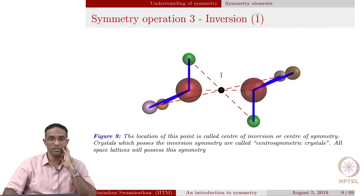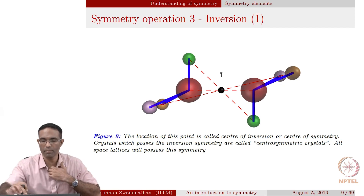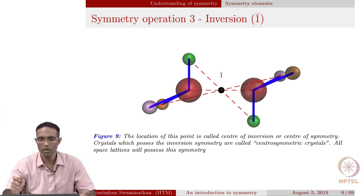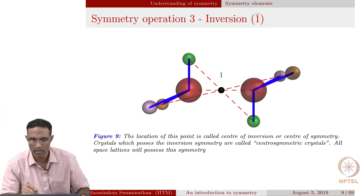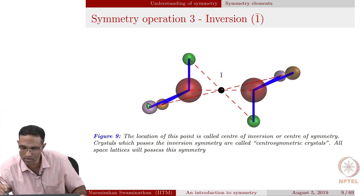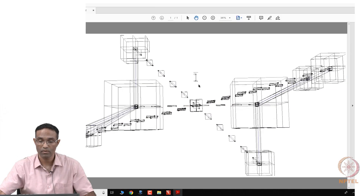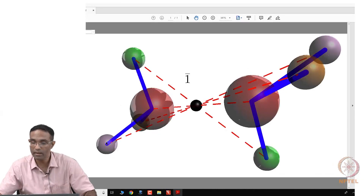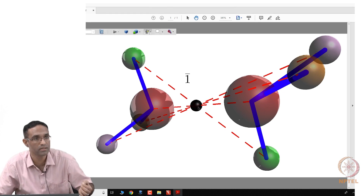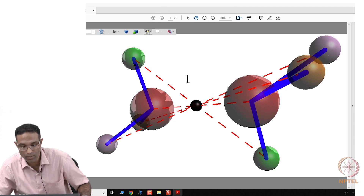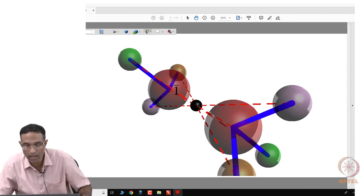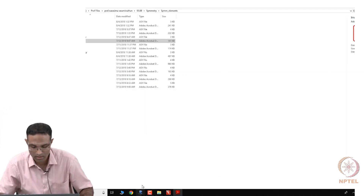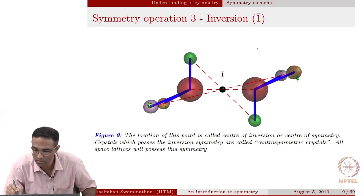The next operation is called inversion. This entire molecule comprising the eight atoms possesses inversion. There is a point through which you can invert the coordinates of these atoms — for example, this will come to the other end, this grey will go to this one. You can see that this grey atom is going through the black ones — this is the inversion center. This is the center through which I am inverting: the green one is coming here and the red one is going right there. This is called the inversion center.